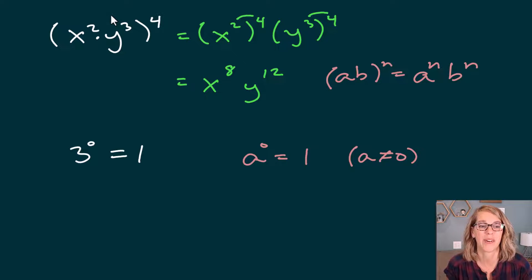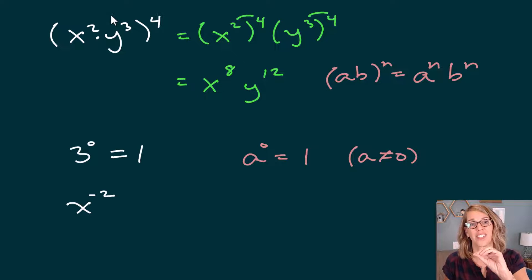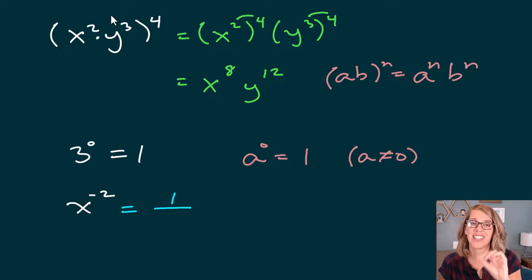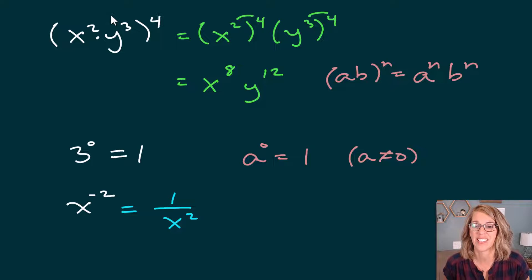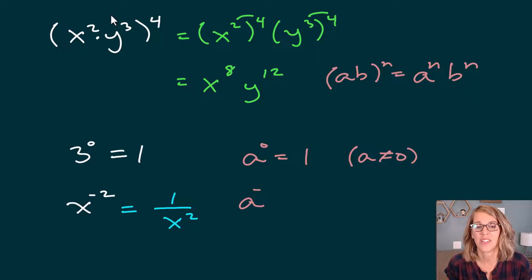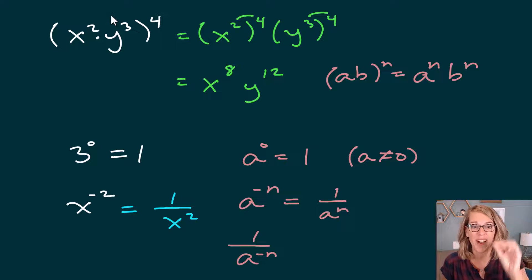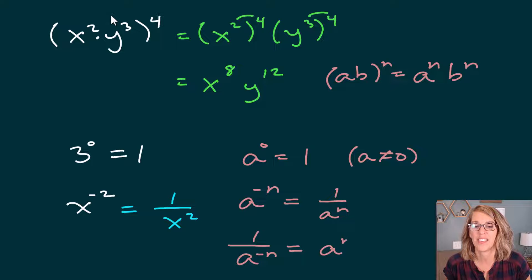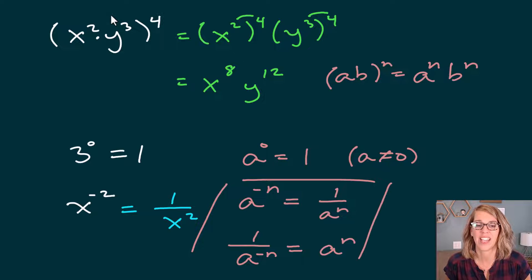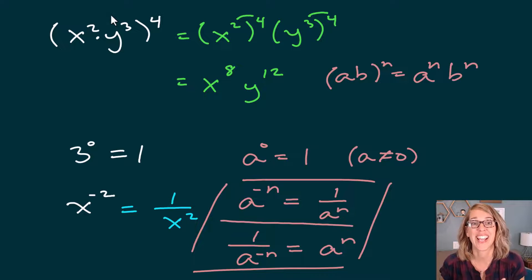In the next one, let's do a negative power. If I have x to the negative two, I can rewrite that as one over x squared. So this is a reciprocal — the negative tells me it belongs in the other spot in my fraction. So this is going to be x squared. The property written two ways: a to the negative n equals one over a to the n; and one over a to the negative n equals a to the n.